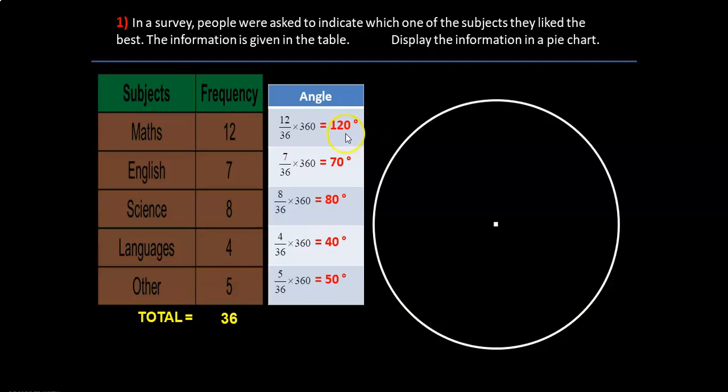Now we know the angle for each subject here. For mathematics we have 120, English 70, science 80 and so on. First, even before we draw these angles we need to make sure that these angles add up to 360 degrees. Please add and check, yes it gives us 360 degrees.